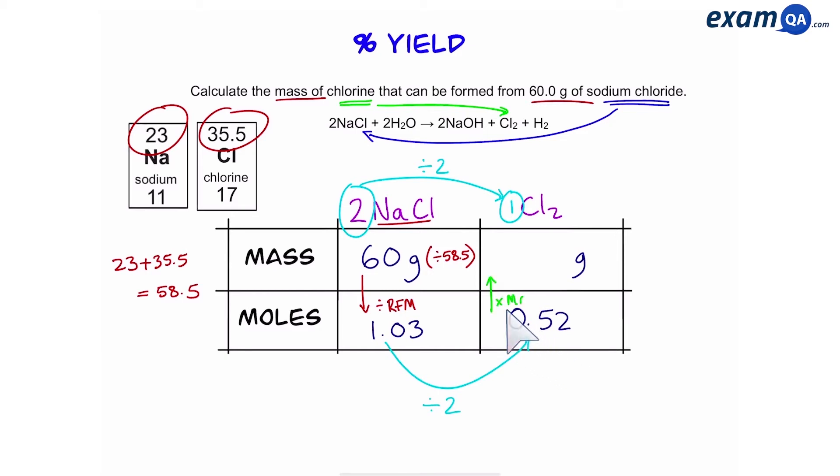Next, to convert that into mass, we're going to times it by the MR of chlorine. So remember, chlorine is 35.5. Since we have two chlorines in Cl2, we're going to have to times that by two, which gives us 71. So the MR of Cl2 is 71. Moles times MR gives you mass. And finally, that gives us 36.9 grams. So for 60 grams of sodium chloride, we get 36.9 grams of chlorine.